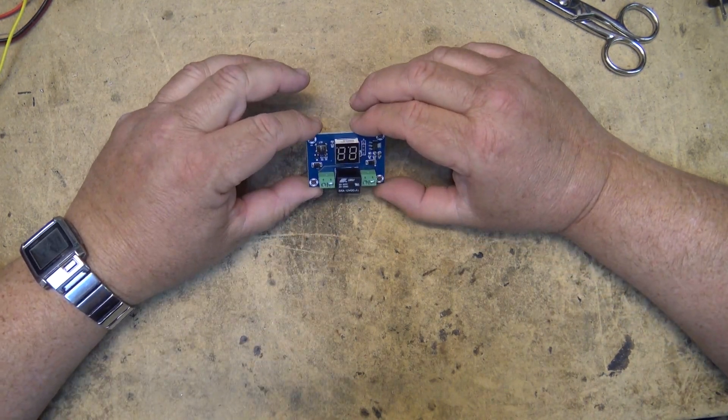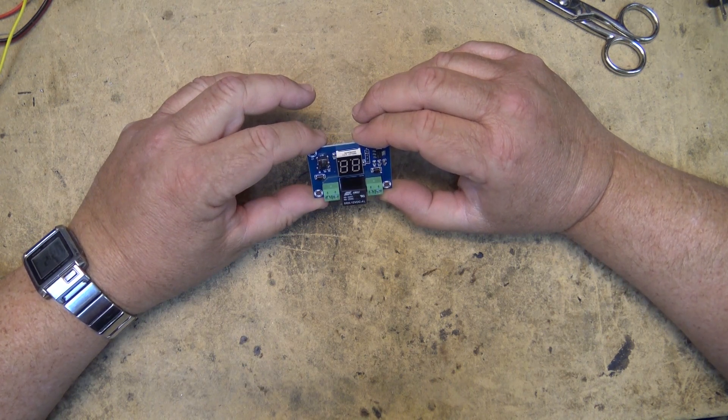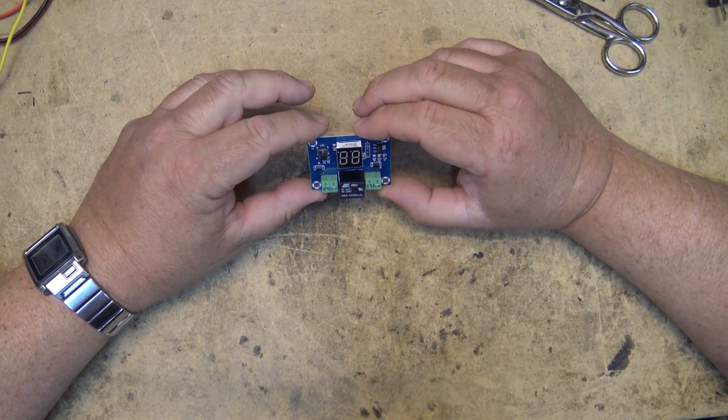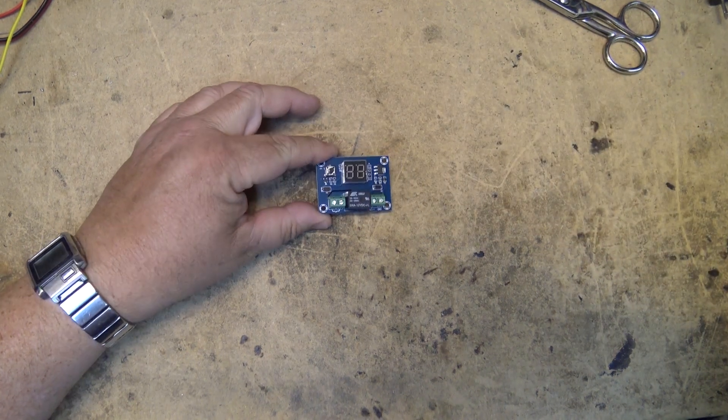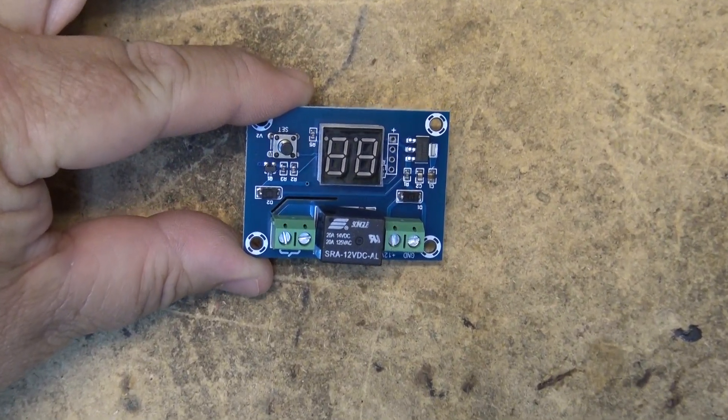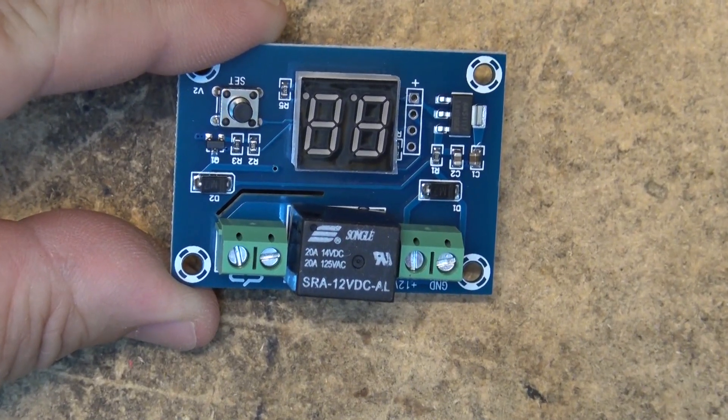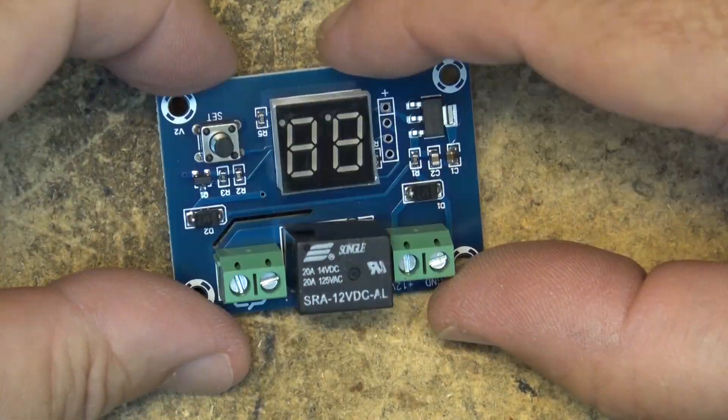It'll handle up to 20 amps at 125 volts and 20 amps at 14 volts DC. This is the relay handling current. We'll just zoom in a bit on the camera here. What we have here is a two-digit display and a single button to control it.